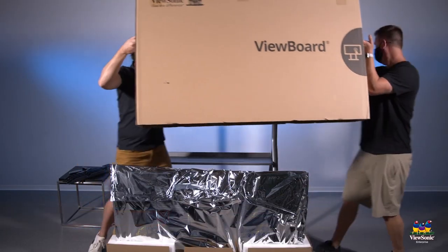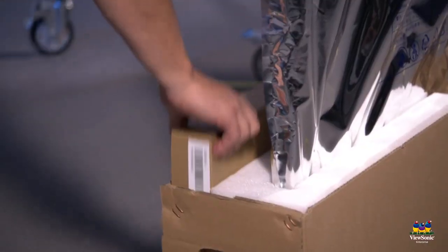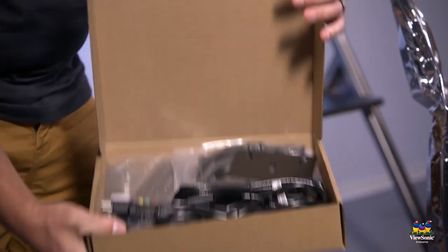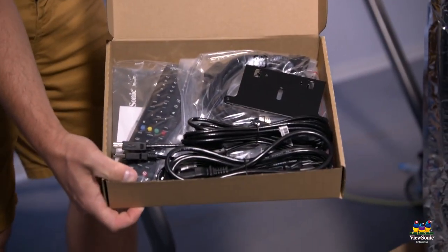You'll notice there's one box that contains accessories. Inside you should see power cables, a remote control, as well as an HDMI and a USB cable, and the styluses. You can put this aside for now.